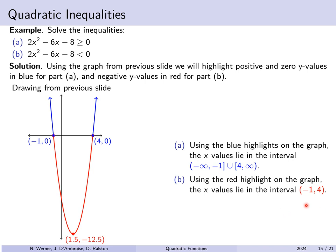This notation can be a little confusing — (−1, 4) is not the point negative 1 comma 4, but the interval of all x values in between, not including −1 and 4. It's a duplication of notation, but try to keep them separate in your mind.